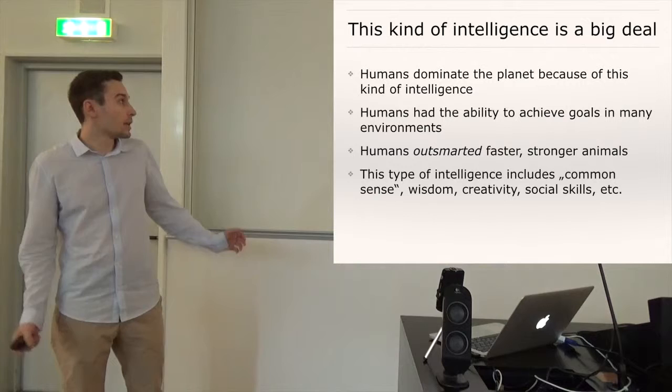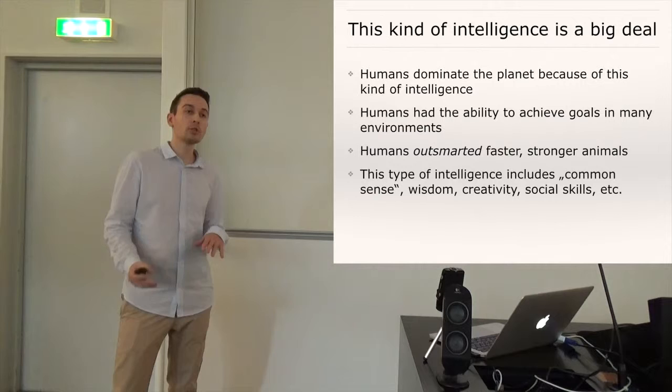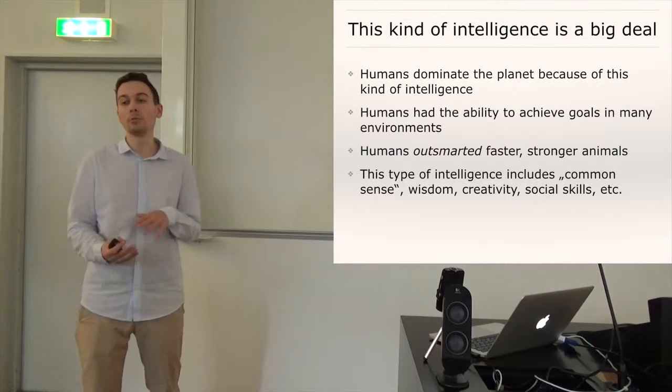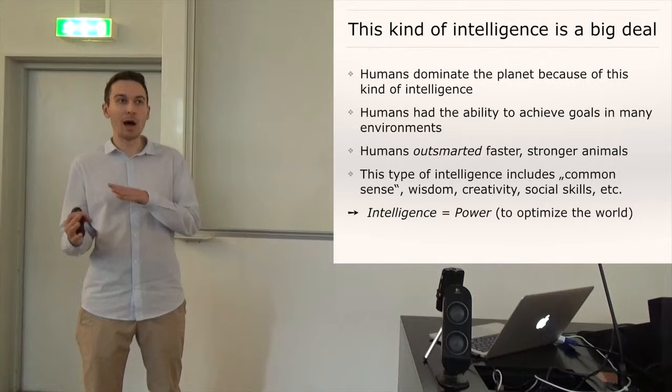And generally just humans were able to outsmart faster and stronger animals. And it's important to keep in mind that this type of intelligence does not only refer to book smarts, it also includes common sense or for example, social skills, because if you are able to win friends and be good in political disputes, then of course, you are better able to achieve your goals. So in a sense, intelligence, this kind of intelligence basically is power and the power to optimize the world according to your preferences.